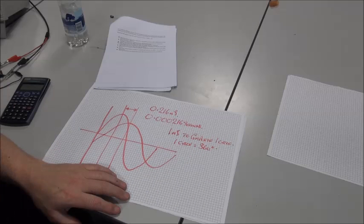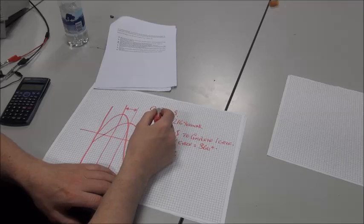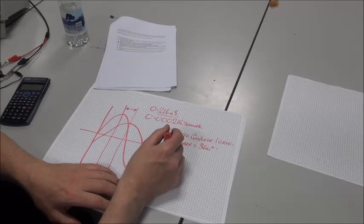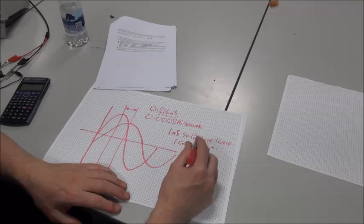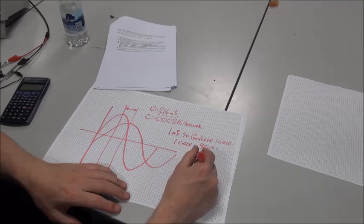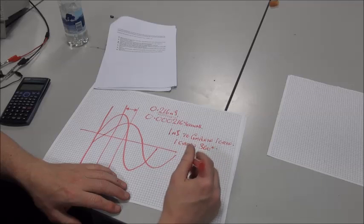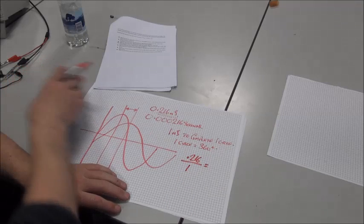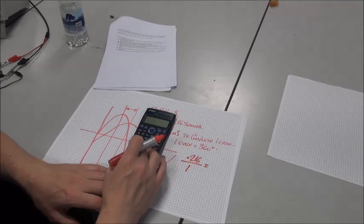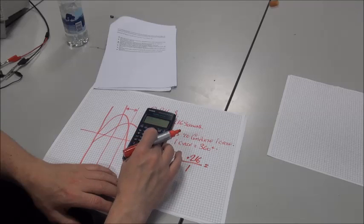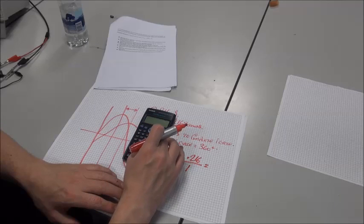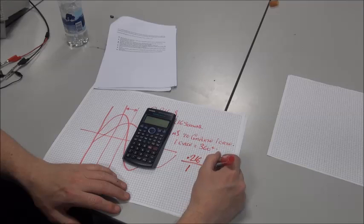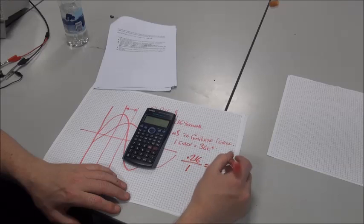What we really need to do is find out what fraction this is to this. So the easy way to do that is 0.216 divided by 1 is equal to 0.216. And therefore,